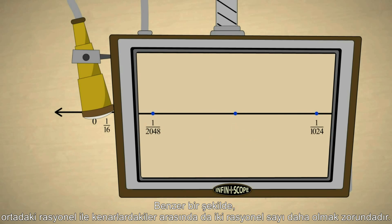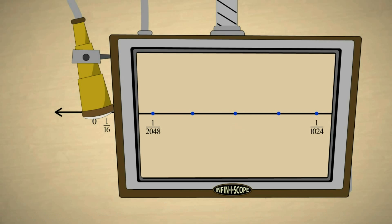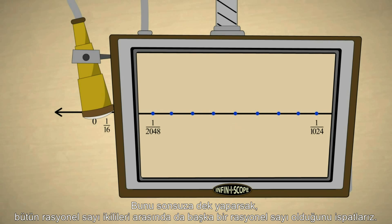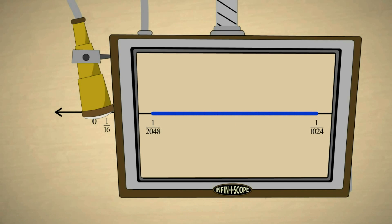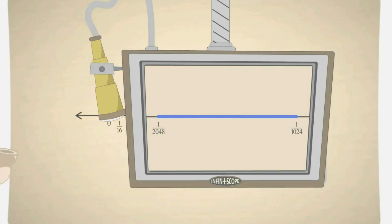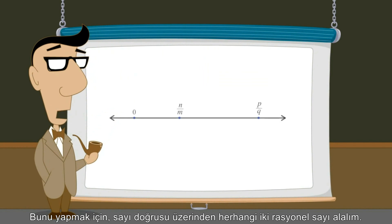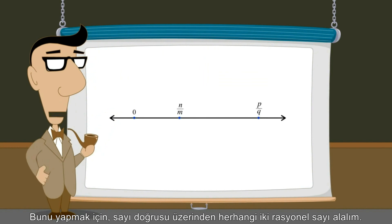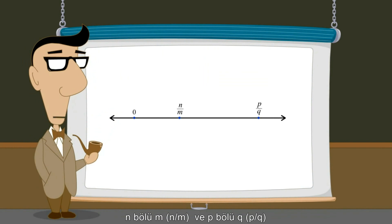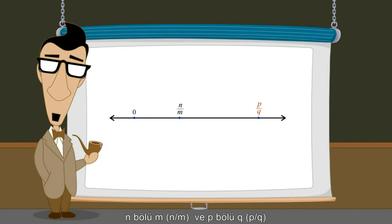Likewise, between this number and the two rational numbers on either side must be two more rational numbers. We can keep doing this forever, proving that there are an infinite number of rational numbers between every pair of rational numbers. To do this, let's take two arbitrary rational numbers on the number line, n over m and p over q.